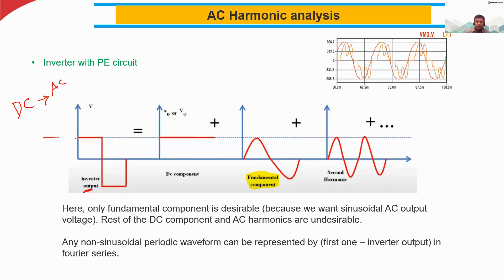At the inverter output, instead of an AC sinusoidal signal, we are getting a kind of square wave. This is because it contains harmonics — it has a DC component, a fundamental component, and higher-order harmonics: second order, third order, fourth order, and so on.